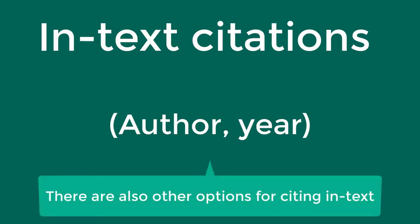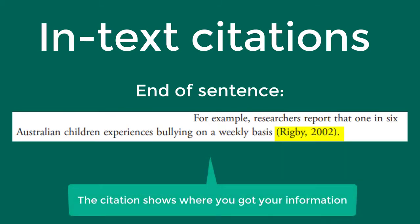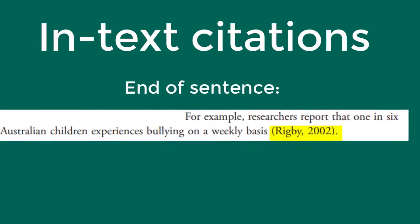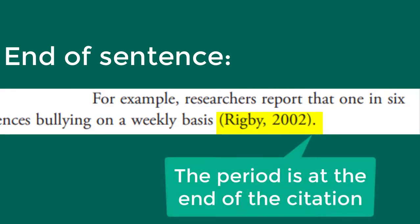There are two ways to use in-text citations. The first way is to put the citation at the end of the sentence, where the whole citation is in parentheses. In this case, you'll write a statement that includes information from a source — meaning information that is not your own — then include your in-text citation: an open parenthesis, the author's last name, a comma, the year of publication, close the parenthesis, and then a period to end the sentence. Note that the period is after the citation, so the citation is considered to be part of the sentence.